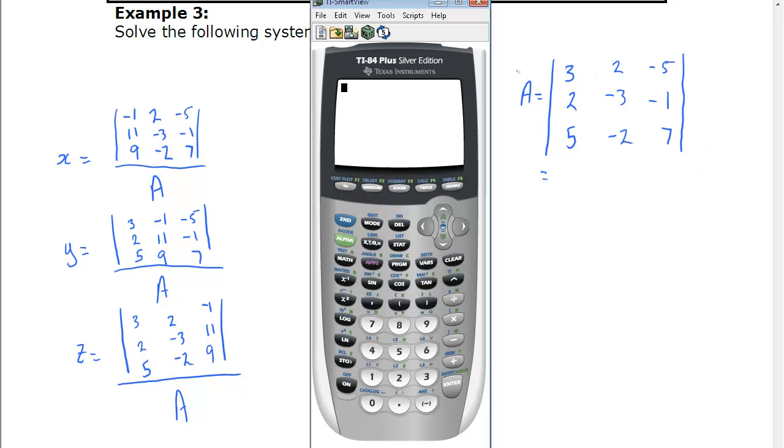So let's get our calculator, and we're going to put in A here. So we first go second function, matrix. We're going to edit, and it doesn't matter if you use one that already has something in it or a new one, but we'll just use this one. And three by three, and we'll just start putting in pieces. So three, two, minus five, two, remember to hit enter each time, minus three, minus one, five, minus two, and seven.